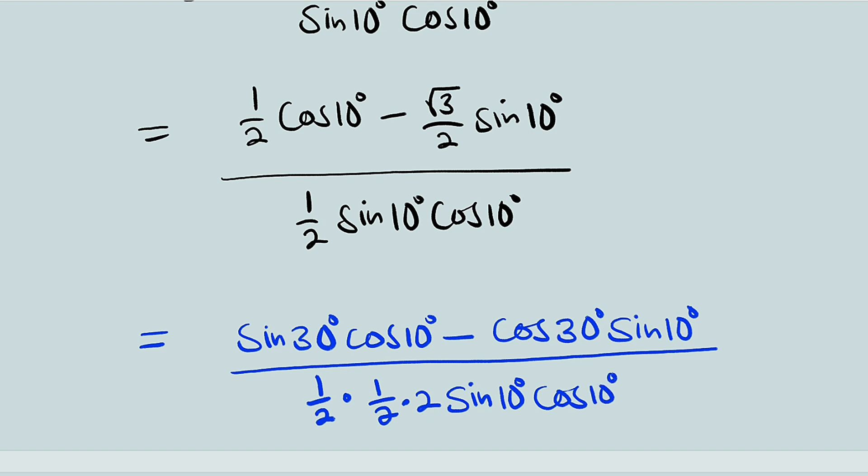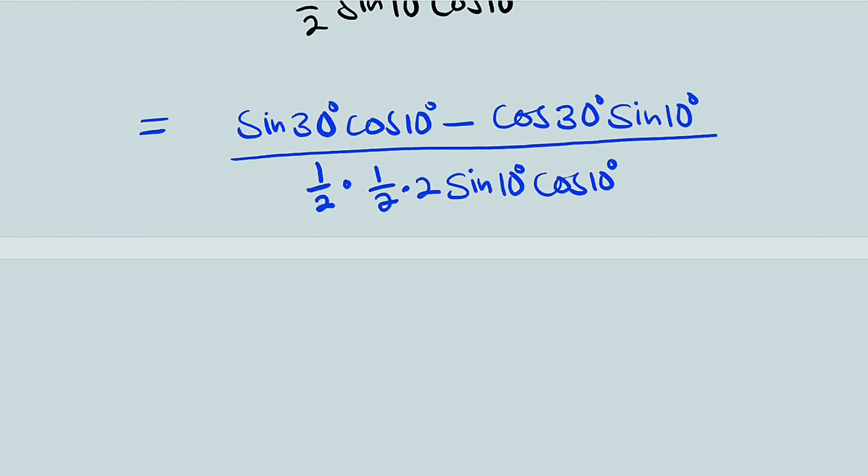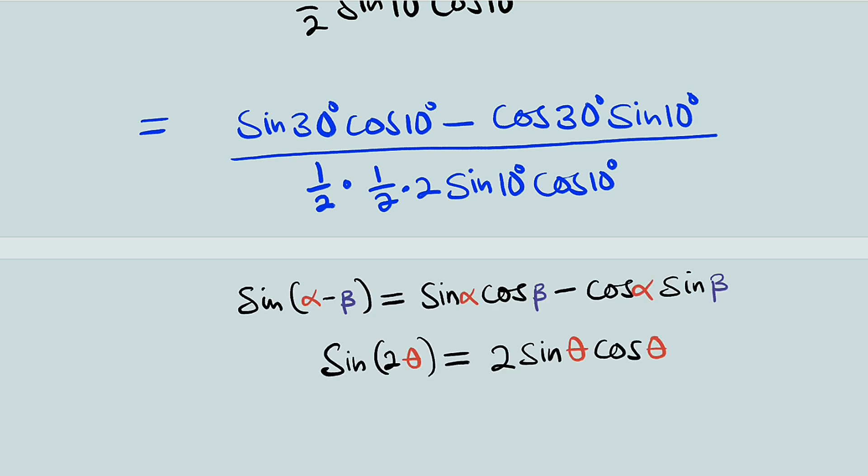To simplify this, I want us to apply two other identities for double angle, which are when you have sine of an angle minus another angle. This is the same thing as sine of the first angle multiplied by cosine of the second angle minus cosine of the first angle multiplied by sine of the first angle. Can you see that it exactly corresponds to what we have here?